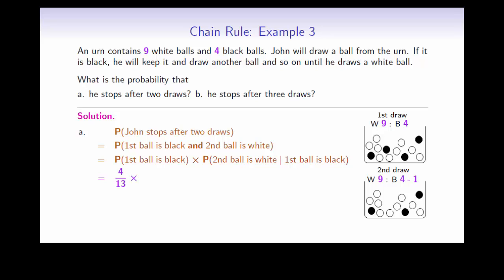The first one is black has a chance of 4 over 13. Now that we have already drawn a black ball, and if we are given that the first ball is black, that means that we have 12 balls left and 9 of them are white, so 9 out of 12. So the total answer becomes 3 over 13.